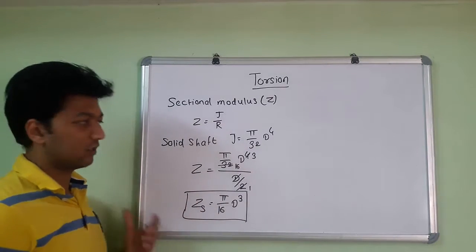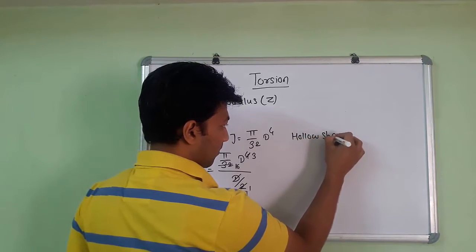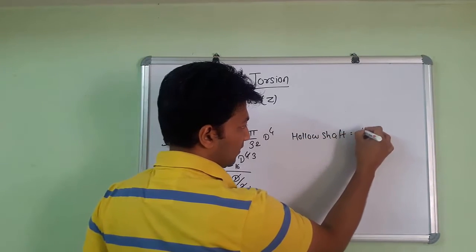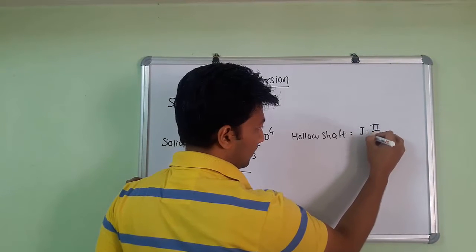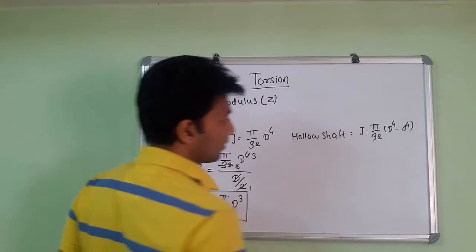We find for the hollow shaft. We know that J will be pi by 32 capital D raised to 4 minus small d raised to 4.